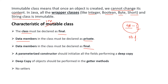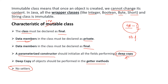The fourth characteristic is that there should be a parameterized constructor to initialize all its data members by performing a deep copy — this is very important and I will explain the deep copy in detail in the code. The fifth characteristic is that we should not provide any setter methods for the data members. The sixth is that getter methods should also perform a deep copy before returning objects. So we have basically six characteristics of an immutable class.